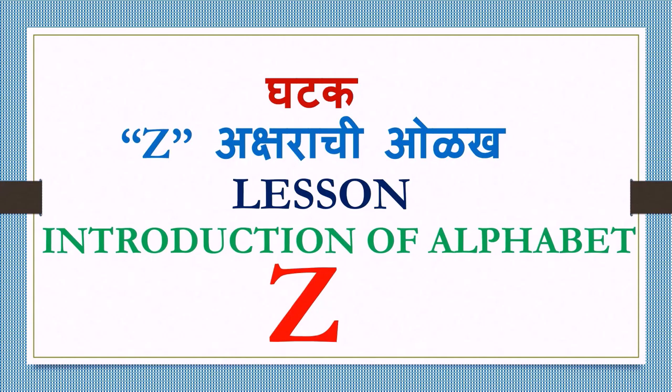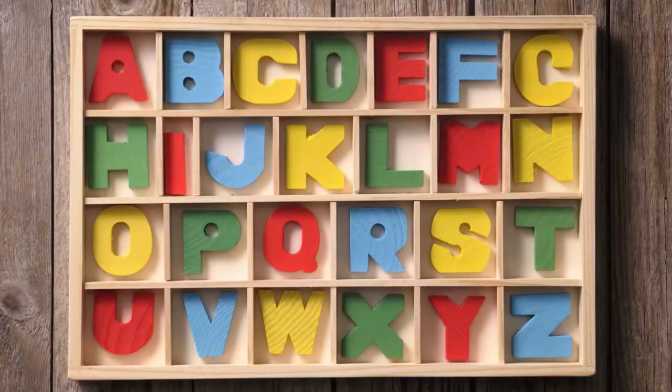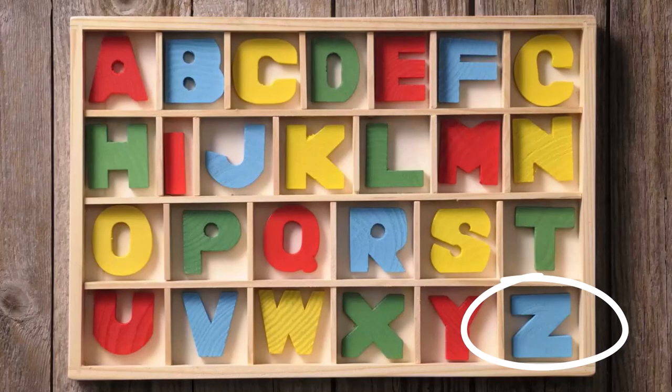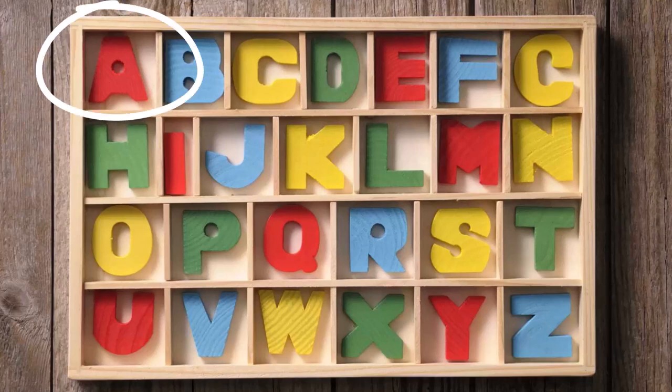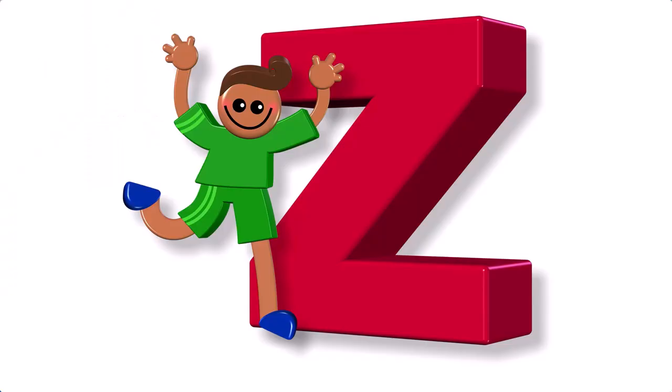Introduction of alphabet Z. Let's see information about the last letter of the English alphabet. Z is the last letter and A is the first letter of the English alphabet. Let's see the information about it.